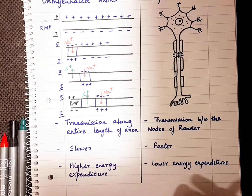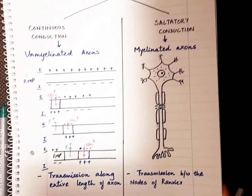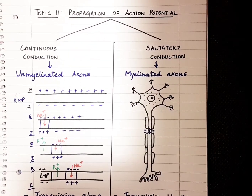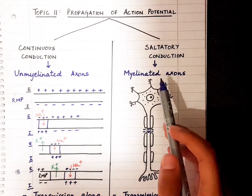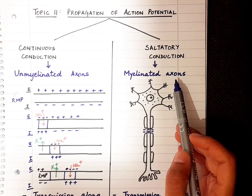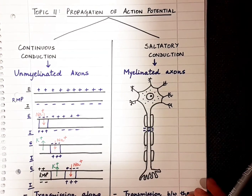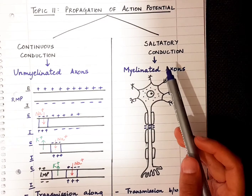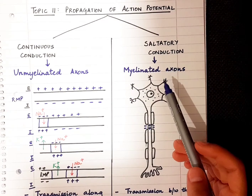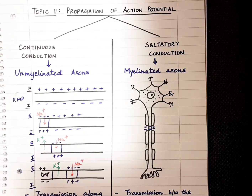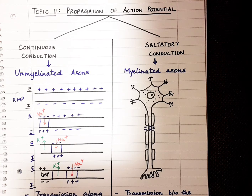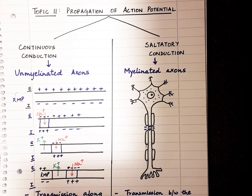Now let's look at saltatory conduction, which occurs in myelinated axons. Myelin is basically the fatty insulating layer made up of proteins and lipids, and it helps in faster conduction of action potentials and also prevents leakage of signals.